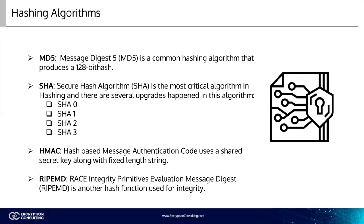Algorithms are the heart of hashing processes. There are many critical algorithms involved. MD5 — Message Digest 5 — is a common hashing algorithm that produces a 128-bit hash. Hashes are commonly shown in a hexadecimal format instead of a stream of ones and zeros. For example, an MD5 hash is displayed as 32 hexadecimal characters instead of 128 bits. Hexadecimal characters are composed of 4 bits and use the numbers 0 through 9 and the characters A through F.